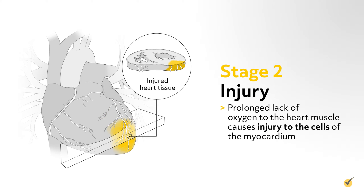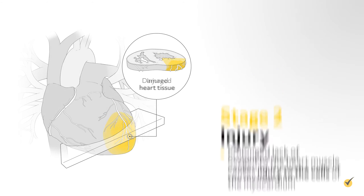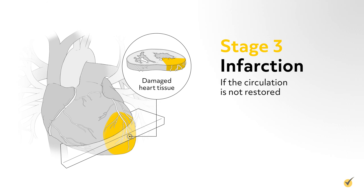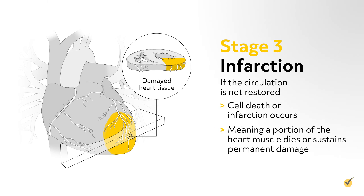Prolonged lack of oxygen to the heart muscle causes injury to the cells of the myocardium. If the circulation is not restored, cell death or infarction occurs, meaning a portion of the heart muscle dies or sustains permanent damage.